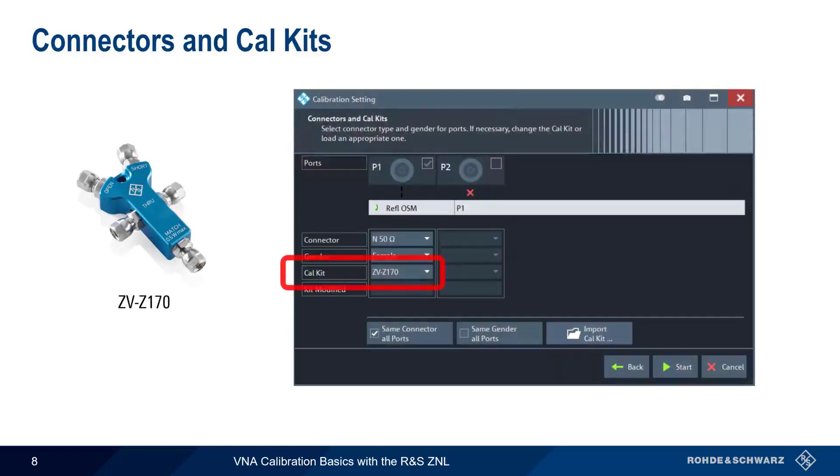In order to get accurate results, we have to provide information about the calibration kit that we're using. We're using the ZVZ170 Manual Calibration Kit, so we select this under Cal Kit. The ZNL comes preloaded with data for a number of common cal kits, but cal kit data can also be imported if necessary. This data is often included with cal kits on a USB stick.